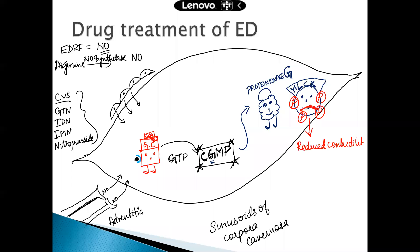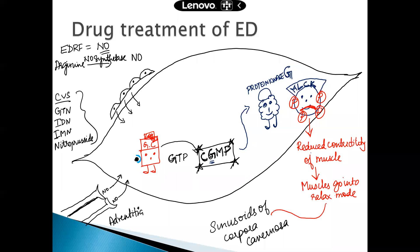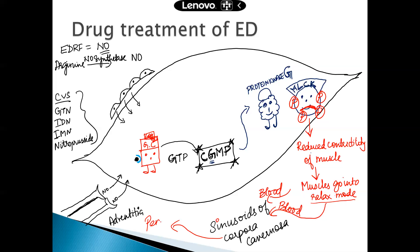When there is switching off of the myosin light chain kinase, what happens is there will be reduced contractility of the muscle. And when there is reduced contractility of the muscle, the muscles go into relax mode. When the muscles relax, the surrounding sinusoids are filled up with blood — there will be ample blood flow. And when the sinusoids of the corpora cavernosa are filled with blood, you get a penile erection. So that is basically the physiology of penile erection.